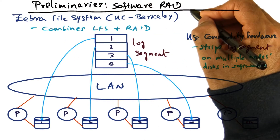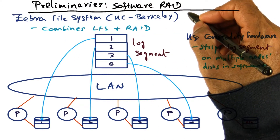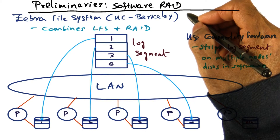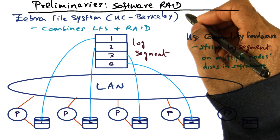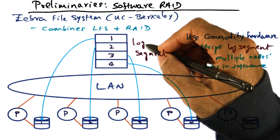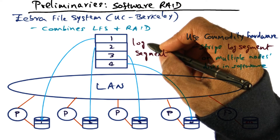The next background technology is software RAID. Hardware RAID has two problems. The first problem is small writes, and we can get rid of that by using a log-structured file system. But hardware RAID also has another problem: it employs multiple hardware drives, and hardware RAID, generally speaking, is a very expensive proposition.